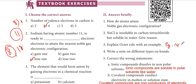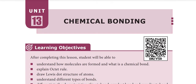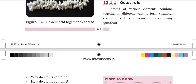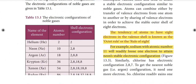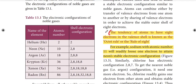Third question: explain the octet rule with an example. The tendency of atoms to have 8 electrons in the valence shell is known as the octet rule or the rule of 8. For example, sodium with atomic number 11 will readily lose 1 electron to achieve neon's stable electronic configuration.